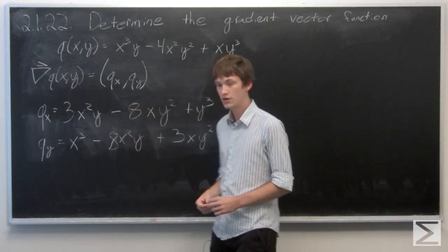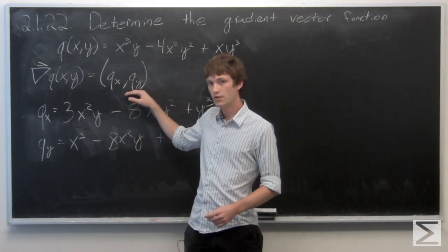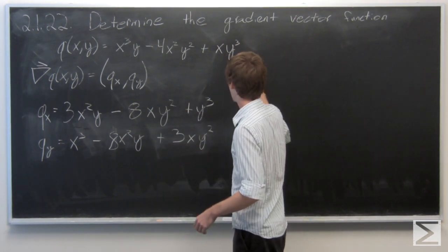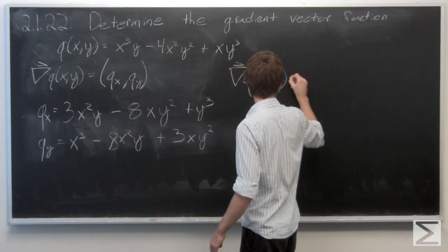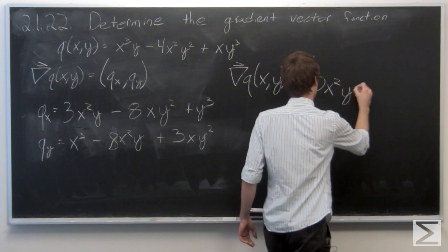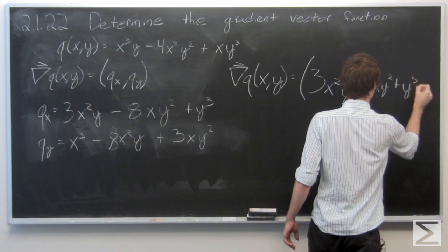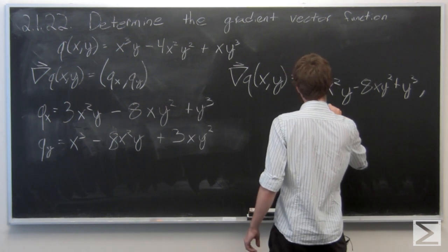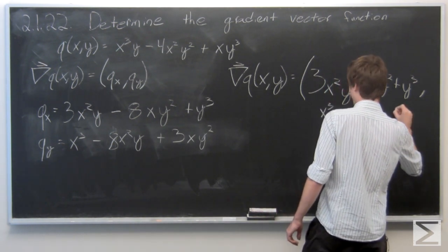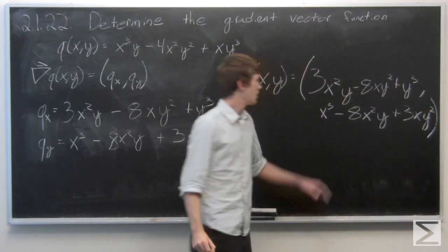So now the gradient vector function is simply the partial derivative with respect to x as the first component, and the partial derivative with respect to y as the second component. And we have the gradient vector function.